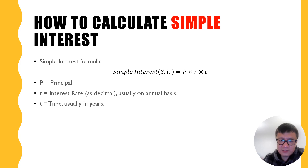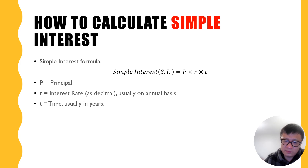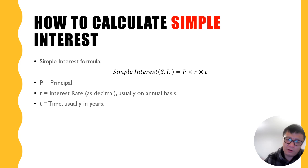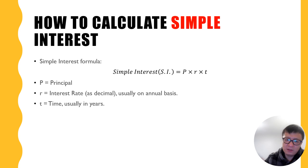So, how to calculate simple interest. Simple interest is basically the formula SI = P × R × T. Here SI stands for the interest. Basically, if you are borrowing P amount of money, you can calculate the interest as P times R times T. P stands for principal, R stands for interest rate, T equals time. It's very simple.